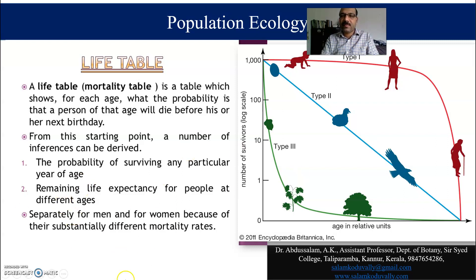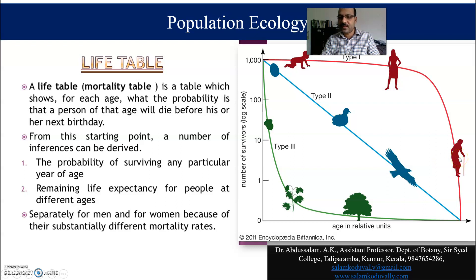Looking at the life table, we can see different age groups represented. There is one age group, then another important one, and a third category. The table is primarily talking about survival across these age groups.